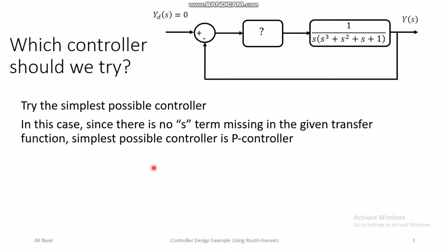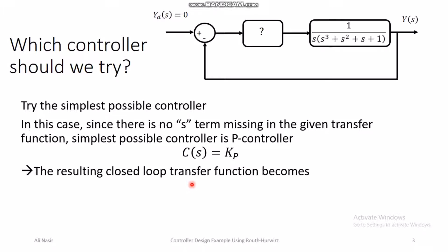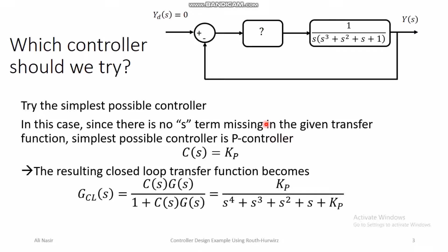The transfer function of a P controller is simply a constant gain Kp. The resulting closed loop transfer function with the P controller, C(s)·G(s) divided by 1 + C(s)·G(s), after simplification gives Kp over (s⁴ + s³ + s² + s + Kp). This is the closed loop transfer function with the P controller, and we shall be applying Routh-Hurwitz on its characteristic polynomial to see if it is asymptotically stable.